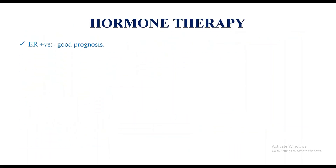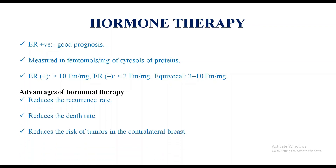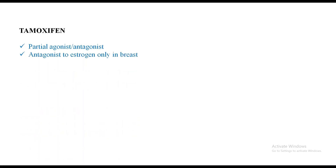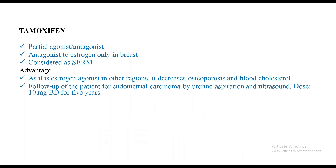ER positive has good prognosis, ER negative has bad prognosis. ER is measured in femtomoles per mg of cytosol protein. ER positive is more than 10, ER negative is less than 3, equivocal is 3 to 10. Advantages of hormonal therapy: reduces recurrence rate, reduces death rate, and reduces the risk of tumor in the contralateral breast. Tamoxifen is a partial agonist or antagonist — antagonist to estrogen only in the breast, considered a SERM (selective estrogen receptor modulator).